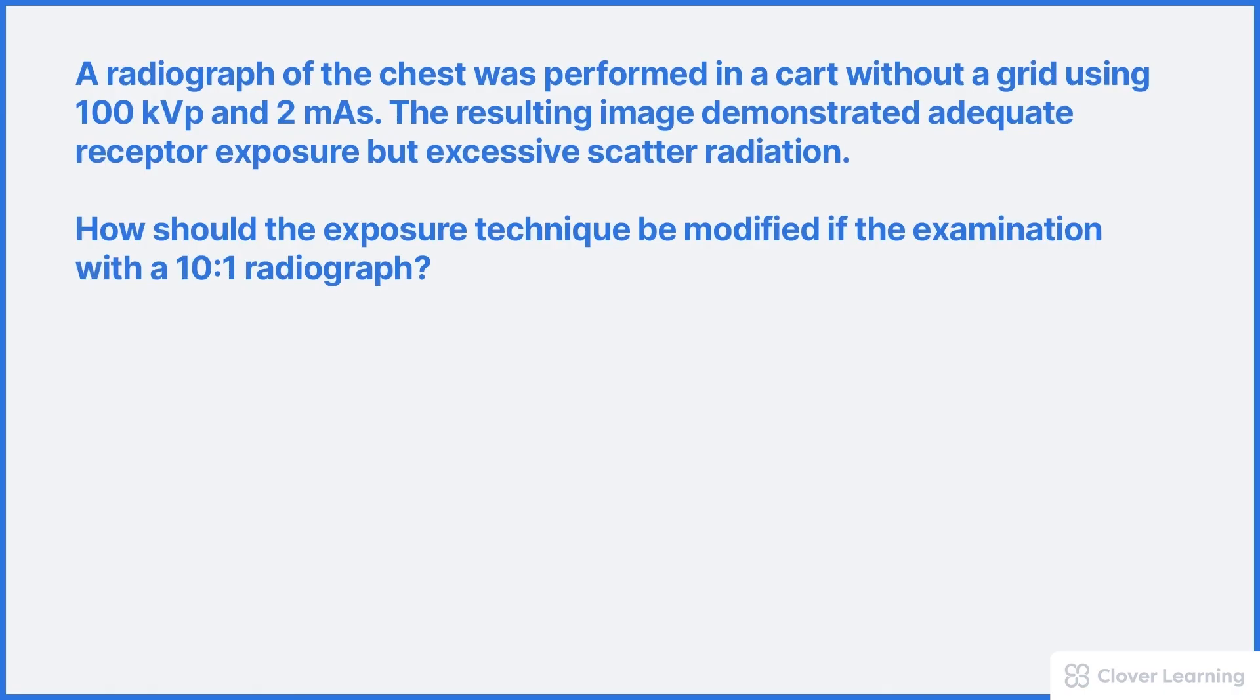We'll use a practice problem to explain how this formula works. A radiograph of the chest was performed without a grid using 100 kVp and 2 mAs. The resulting image demonstrated adequate receptor exposure but excessive scatter radiation. How should the exposure technique be modified if the examination is repeated with a 10 to 1 radiographic grid? The mAs should be modified using the grid conversion formula. We can't just guess.